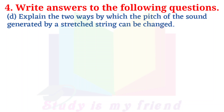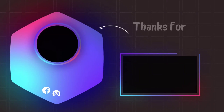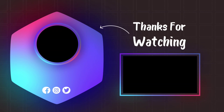D. Explain the two ways by which the pitch of the sound generated by a stretched string can be changed. Answer: 1. When the tension in the wire is increased, the frequency increases and the sound produced is shriller. When the tension is decreased, the frequency decreases and the sound is less shrill. 2. When the length of the wire is decreased, the frequency increases and the sound is shriller. When the length is increased, the frequency decreases and the sound is less shrill. Using these two ways, the pitch of the sound generated by a stretched wire can be changed.